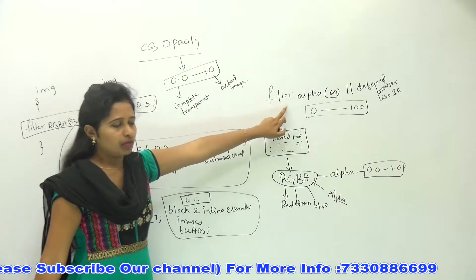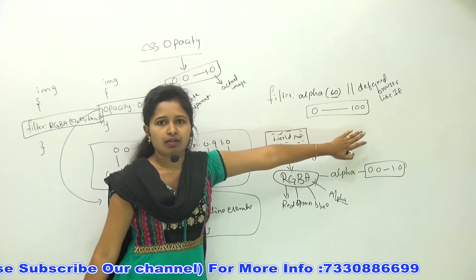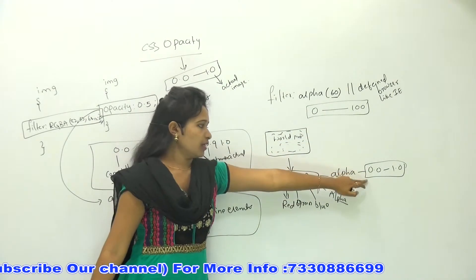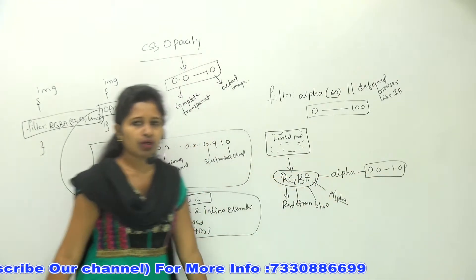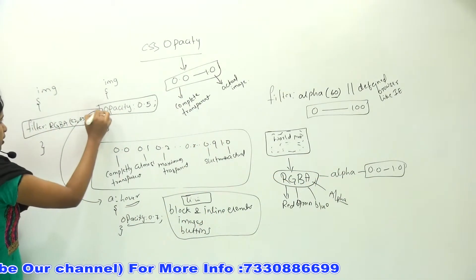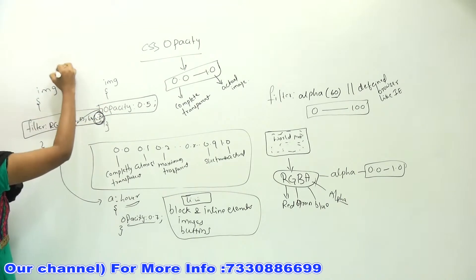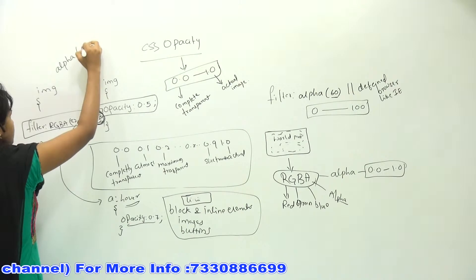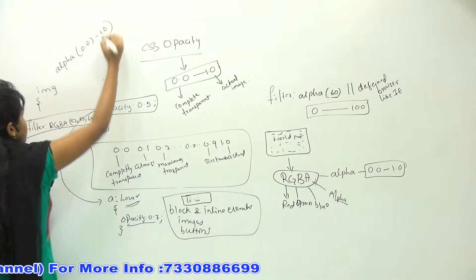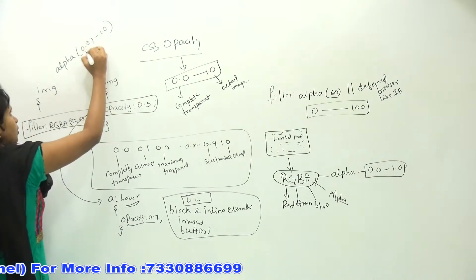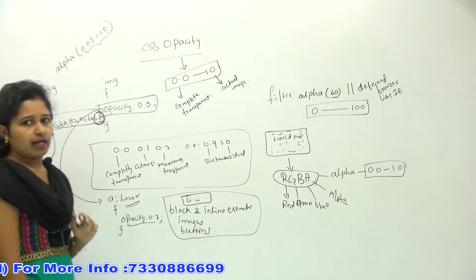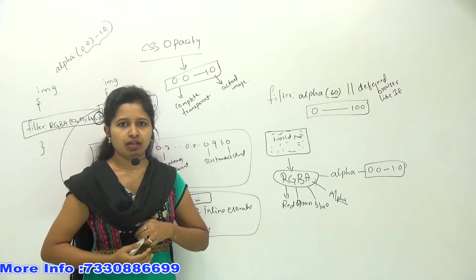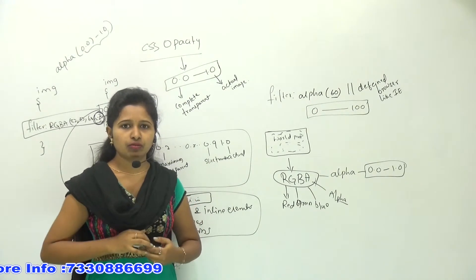The previous alpha in filter mode had a range of 0 to 100, but after RGBA came in CSS3, the range became 0.0 to 1.0. So make sure that whatever value you give for alpha, it should be within the range 0.0 to 1.0. This is regarding opacity, and for more we will see it in the application part.